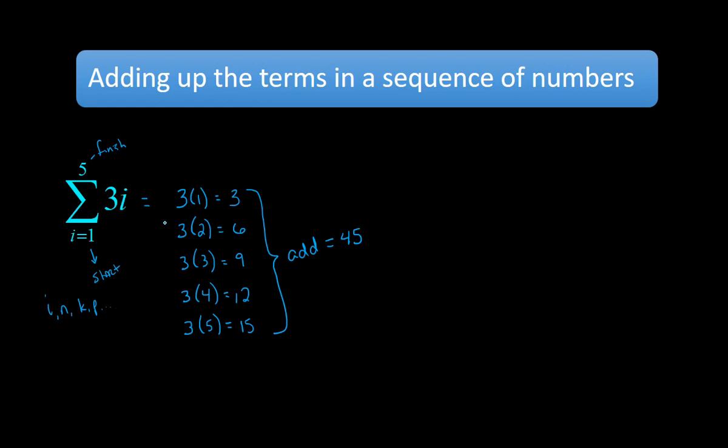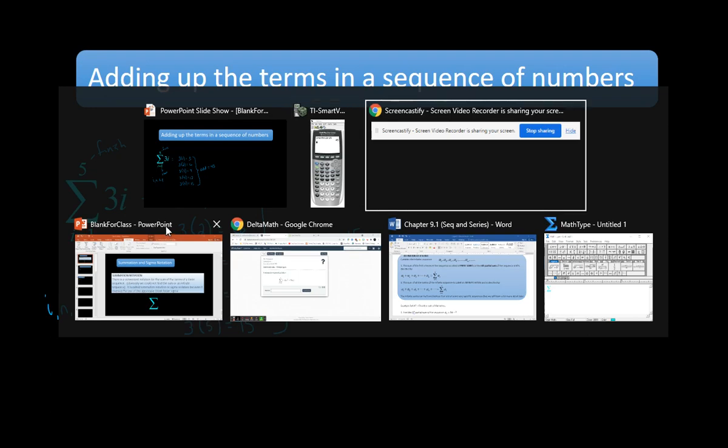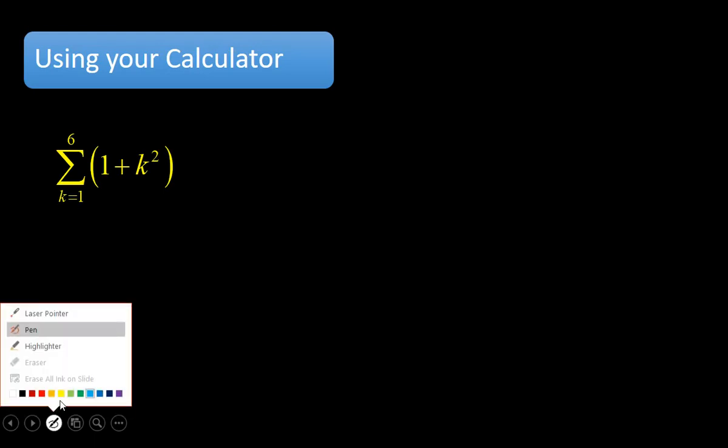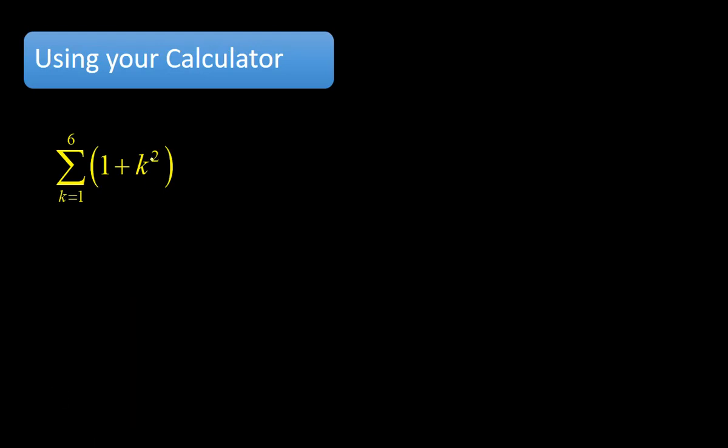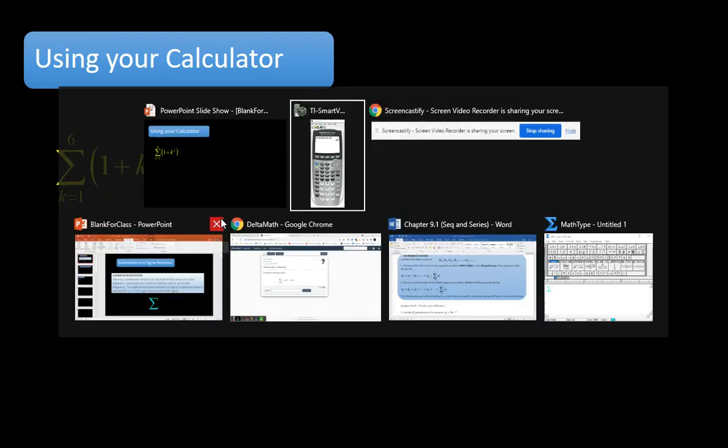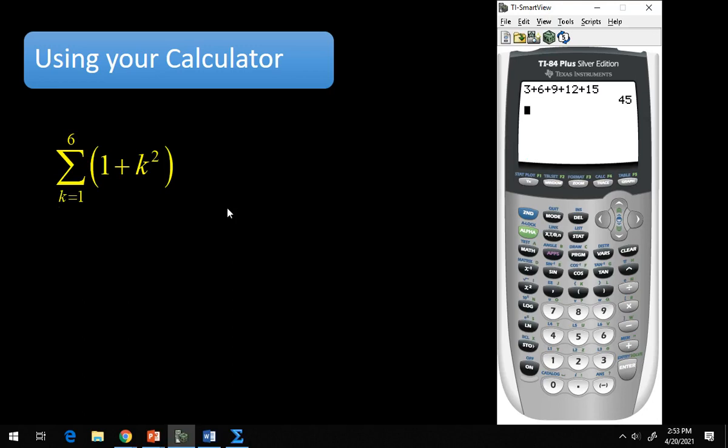So let's say we had the summation from 1 to 6 of 1 plus k squared. We're using k this time. Again, not a big deal. It could use x, k, and whatever. So instead of writing this out 6 times, I'm going to use my calculator. So the shortcut is alpha f2, and you get the summation notation, which is number 2 right here. So I pull that up.